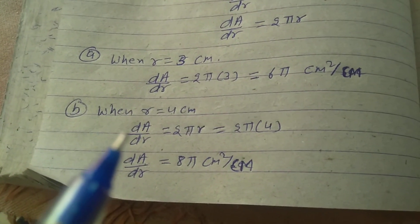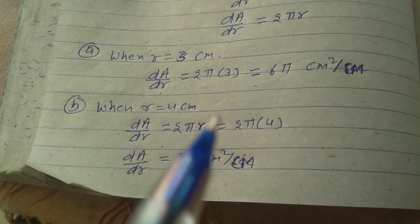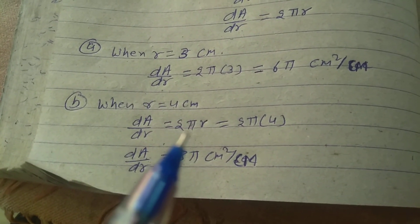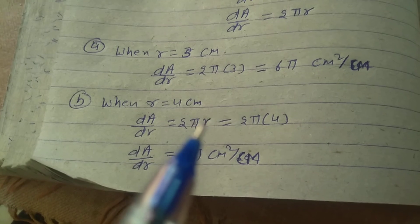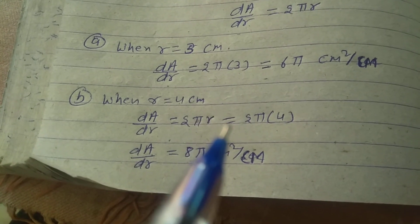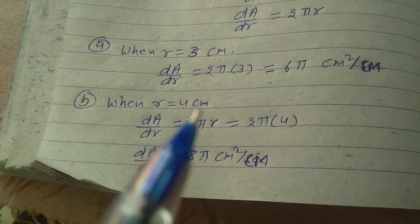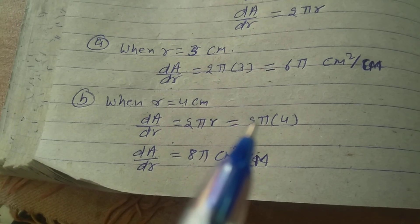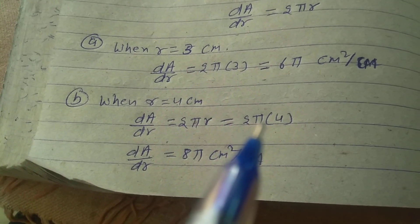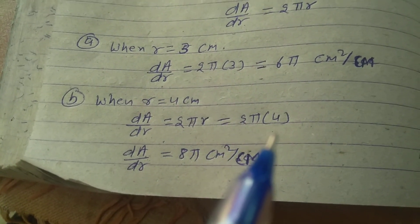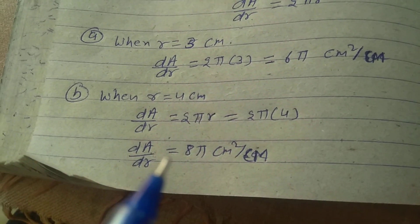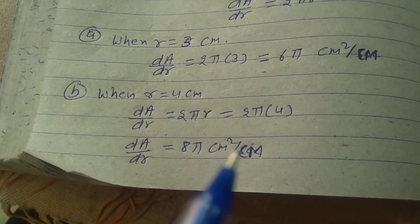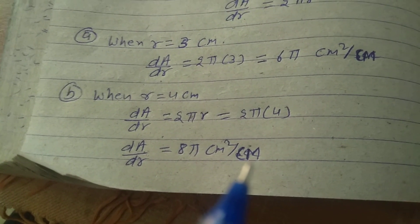When r is equal to 4 cm, dA upon dr is equal to 2 pi r. The value of r is 4 cm, so 2 pi bracket 4, giving dA upon dr is equal to 8 pi cm square per cm.